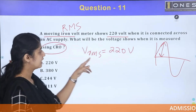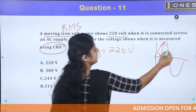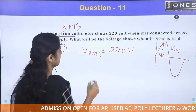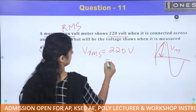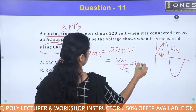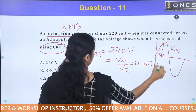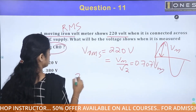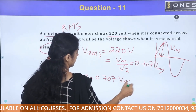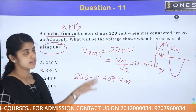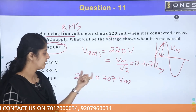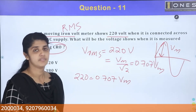The RMS value equals the peak value Vm divided by root 2. So the RMS value is 0.707 × Vm. Therefore, 220 = 0.707 × Vm.